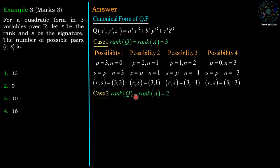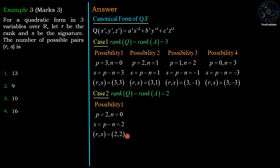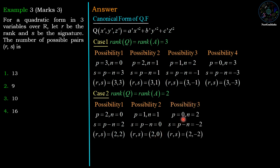Now if rank = 2: first possibility, p = 2 and n = 0 — both terms are positive, no negative terms. Signature S = p − n = 2, giving pair (2, 2). Second possibility: p = 1 and n = 1, so S = 1 − 1 = 0, giving pair (2, 0). Third possibility: p = 0 and n = 2 — two negative terms. S = p − n = −2, giving pair (2, −2). So for rank = 2, we have 3 possible pairs for (R, S).